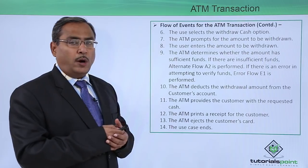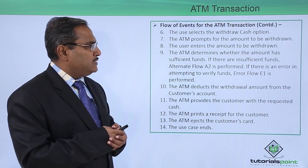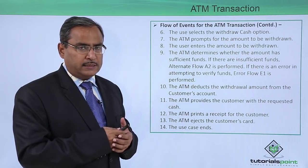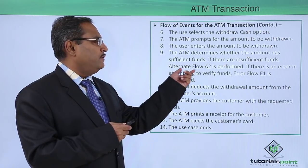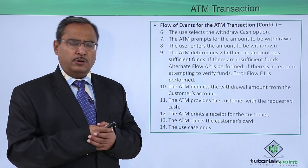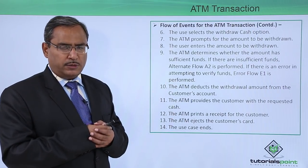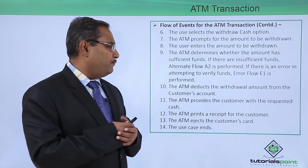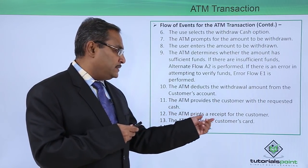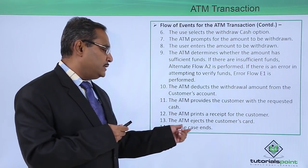The user selects the withdraw cash option. The ATM prompts for the amount to be withdrawn, and the user enters the amount. The ATM determines whether the account has sufficient funds. If there are insufficient funds, alternate flow A2 is performed; if there is an error in attempting to verify funds, error flow E1 is performed. The ATM deducts the withdrawal amount, provides the cash, prints a receipt, ejects the customer's card, and the use case ends.